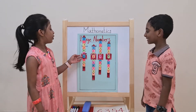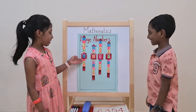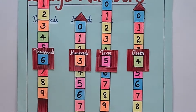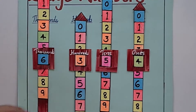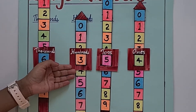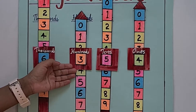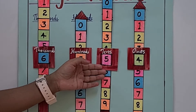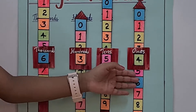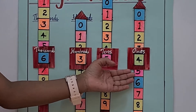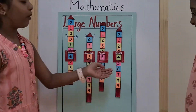Here, for the digit 6, its place value is 6000. For the digit 3, its place value is 300. For the digit 5, its place value is 50. For the digit 4, the place value is 4.